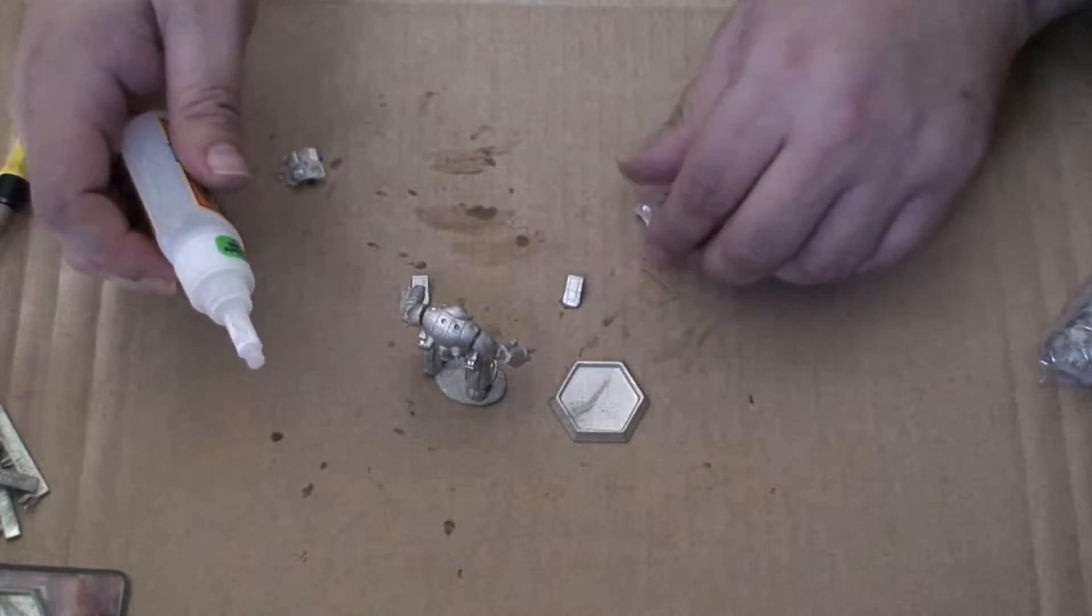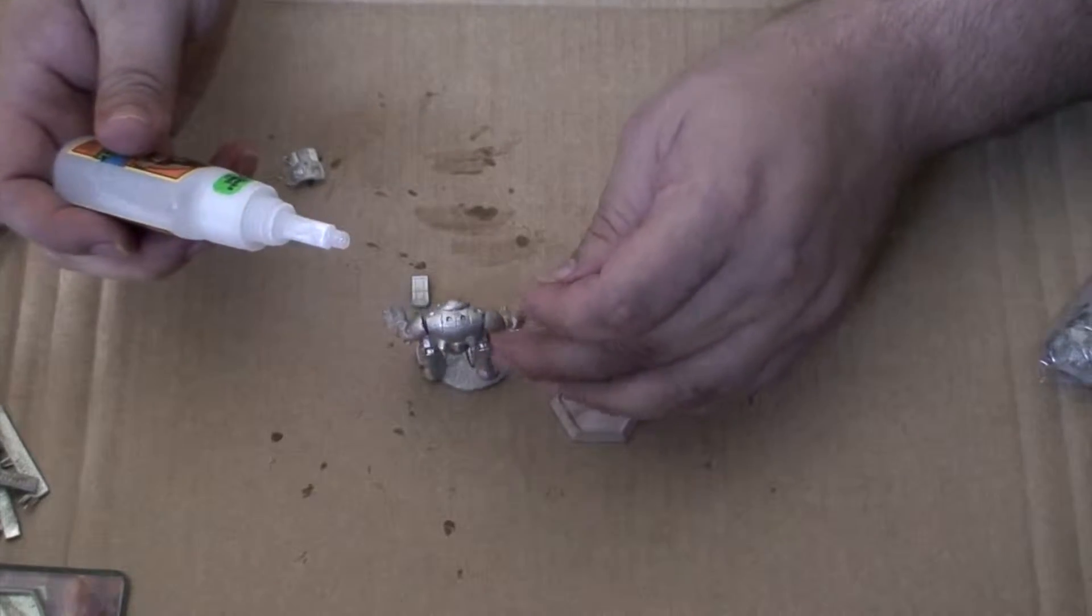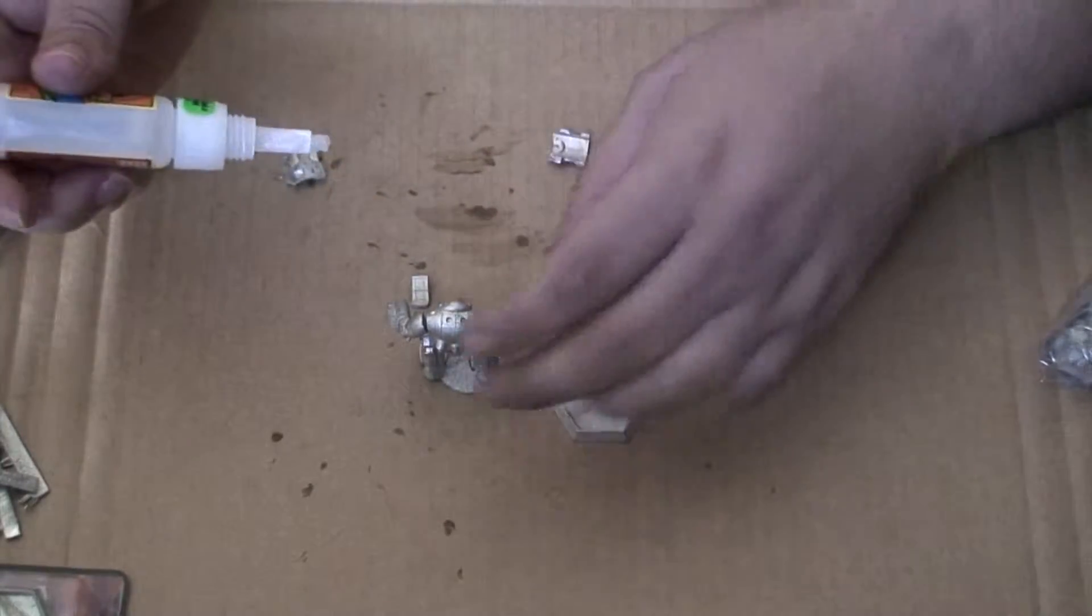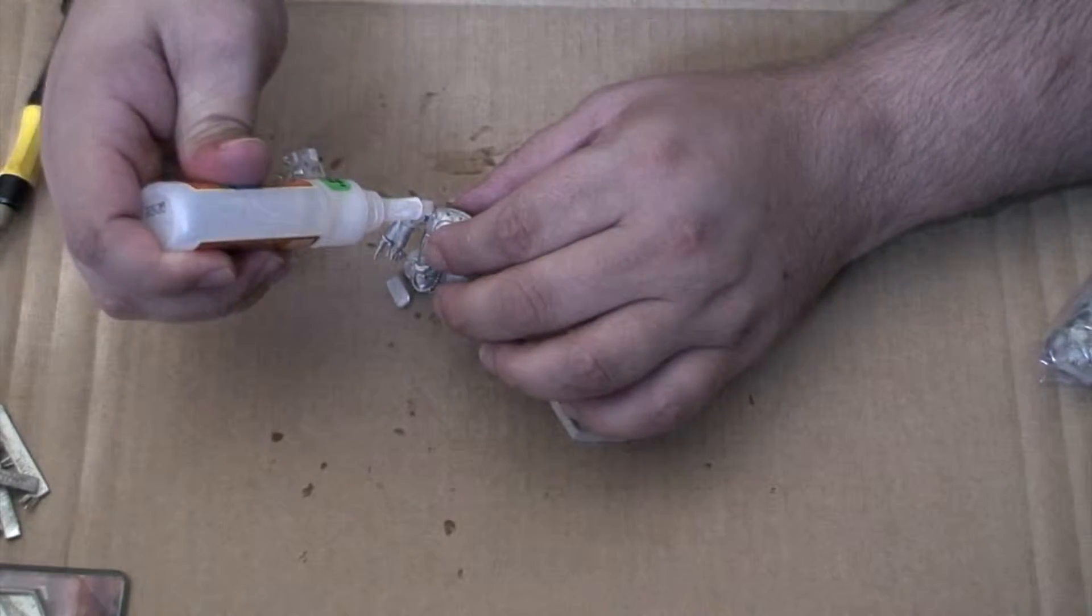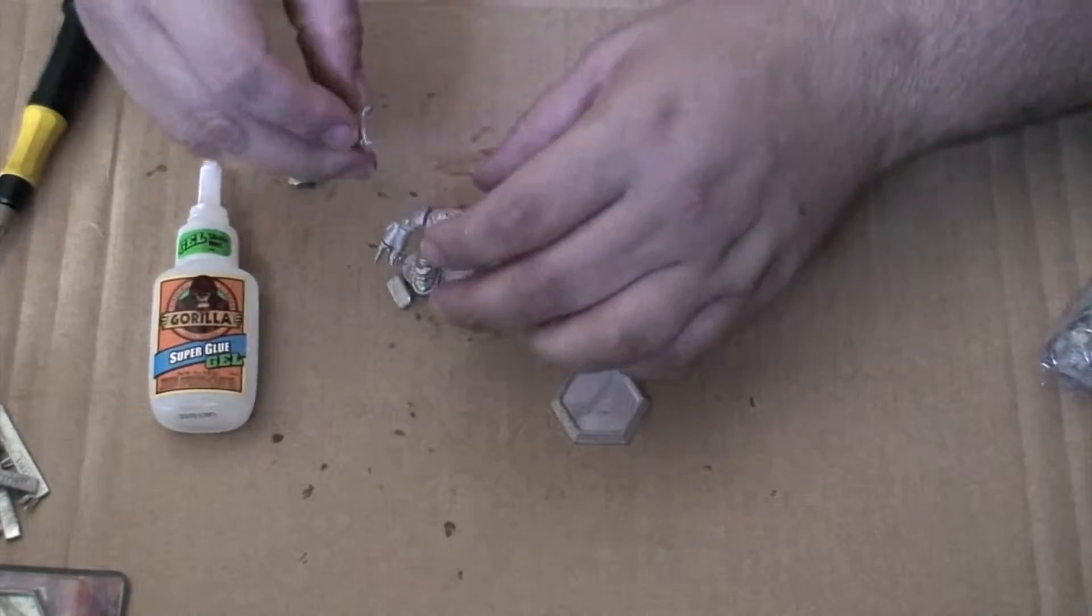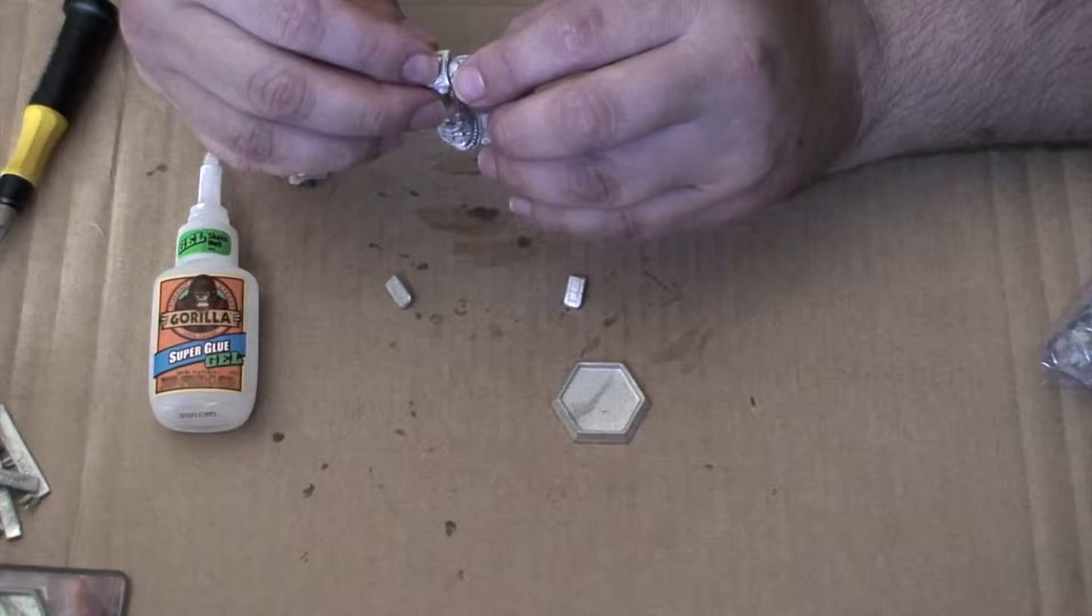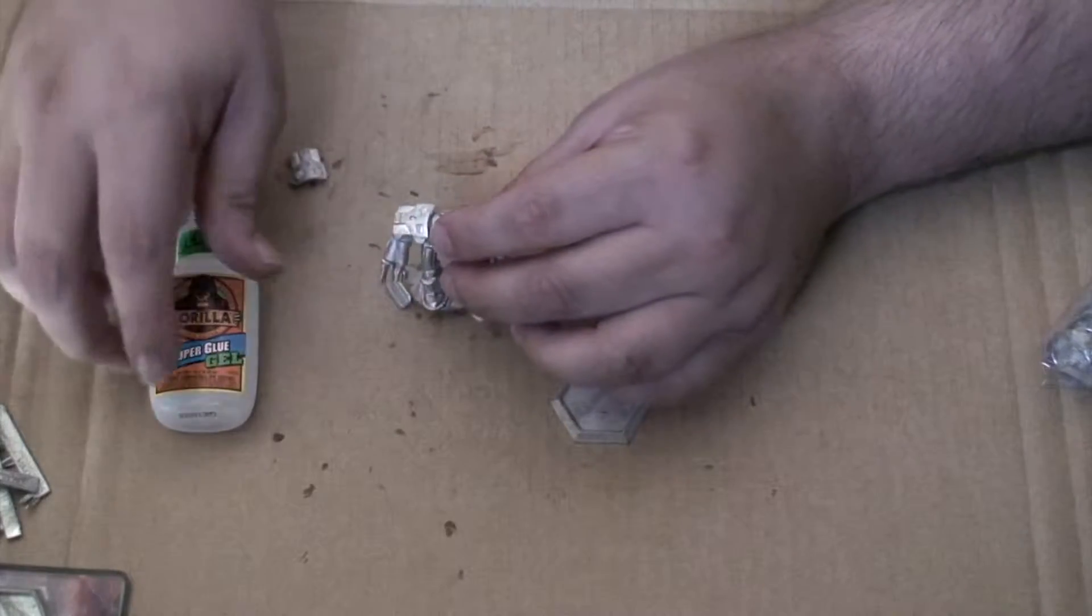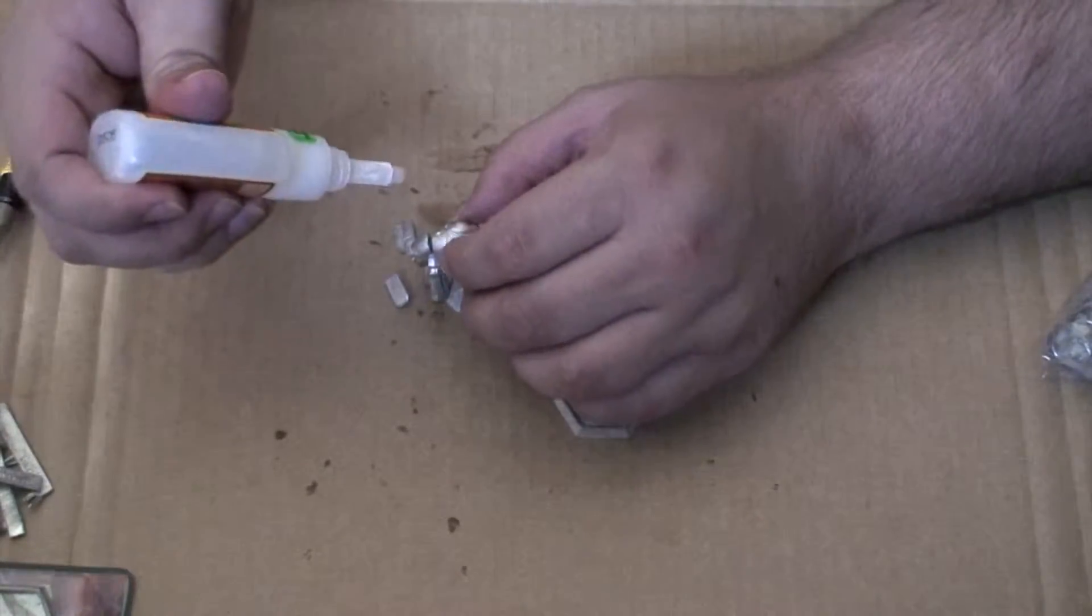We'll start with these joint shields first, which are going to be going in these two slots. Now it doesn't matter which one goes where, because they're not keyed, and they both look the same. We'll attach this one. Just got to be sure to find the dot. Then we'll attach the other one.